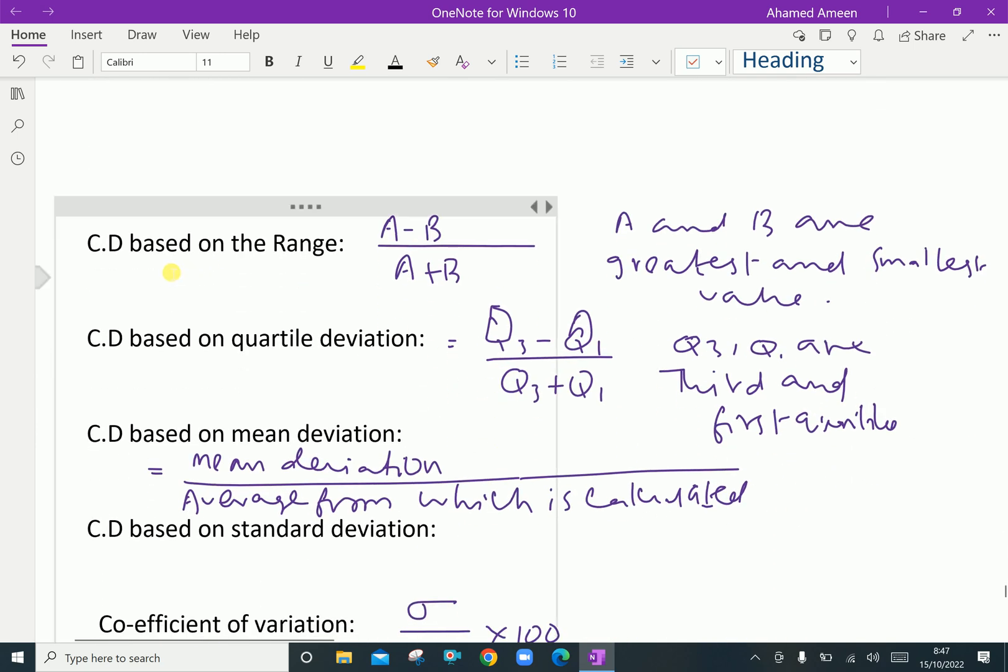Here, CD based on the range is (A - B) / (A + B), where A and B are the greatest and smallest values of X.